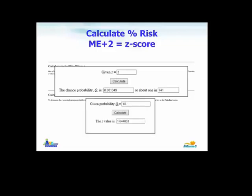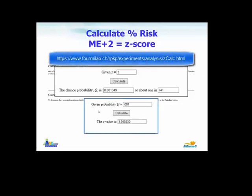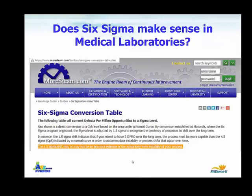If you want to set an acceptable risk level of 5%, then your acceptable sigma is 1.65. If you want a 0.1% error rate, as achievable for glucose, you'd set your acceptable sigma level at 3.1. There is an assumed shift in six sigma: they automatically adjust by 1.5 sigma to recognize the tendency of processes to shift over the long term. The 1.5 sigma shift may or may not be an accurate estimate of the actual long-term instability of your process.